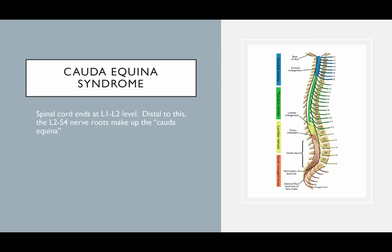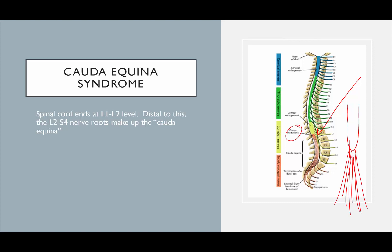For cauda equina syndrome, we first need to know what the cauda equina is. The spinal cord ends at the L1-L2 level, at the conus medullaris—the tip of the spinal cord. Everything below that is just the nerve roots, otherwise known as the cauda equina, or horse's tail. As you can see, those are all the lumbar sacral nerve roots coming down below the conus. In the lumbar spine, you have mostly cauda equina, with very little spinal cord remaining, except perhaps at L1.